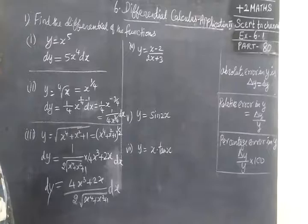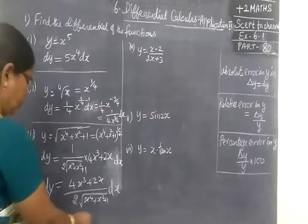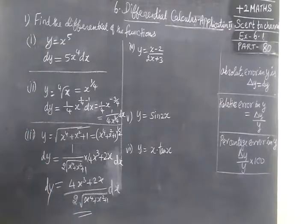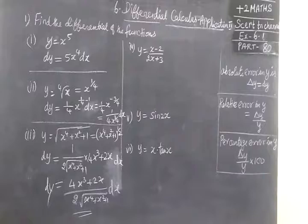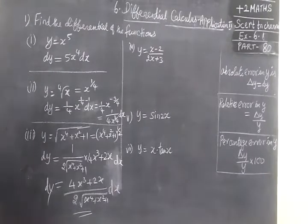Then next one. For all this we check the answer first. First one 5x power 4. Second one 1 by 4x power minus 3 by 4. Then third one also correct. So all this are correct.